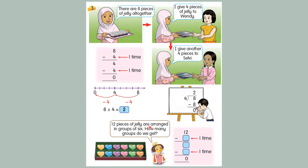12 pieces of jelly are arranged in groups of 6. How many groups do we get? We need to minus 6. 12 minus 6 equal to 6. 6 minus 6 equal to 0. Means that 12 divided by 6 equal to 2.